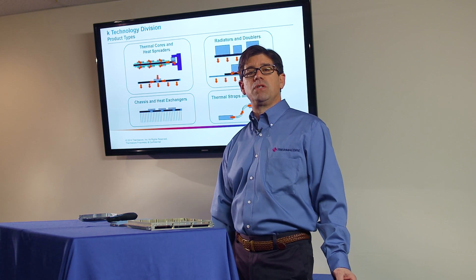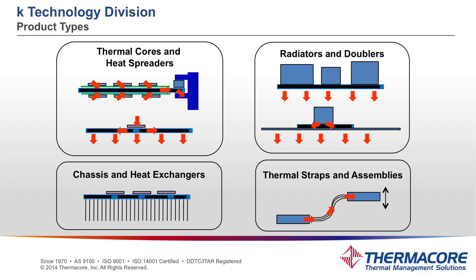Another embodiment of the material is a thermal strap. The annealed pyrolytic graphite, when machined thin, is flexible. We wrap a thin skin around that — either a Kapton or a metal foil — which gives you a flexible, compliant, highly conductive heat transfer device. That's used for part isolation, part compliance, and a number of other applications.